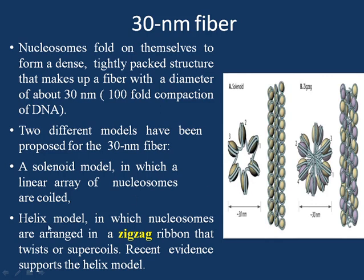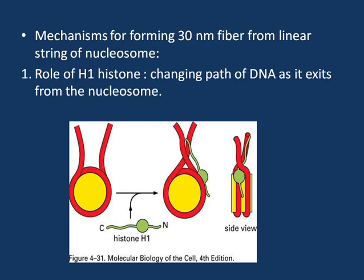Two models have been proposed: the solenoid model, in which nucleosomes are linearly arranged, and the helical model, in which nucleosomes are arranged in a zigzag manner. The zigzag packaging of the nucleosome to form the 30 nanometer fiber is now being supported. There are a number of factors and mechanisms which help in forming this 30 nanometer fiber from the linear string of nucleosomes.